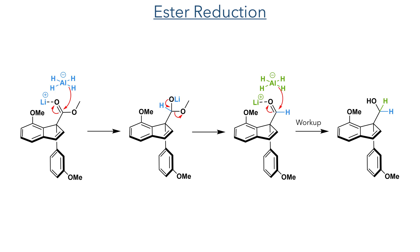The ester was then reduced using lithium aluminium hydride. Activation of the ester by coordination to the lithium cation increases the electrophilicity and allows the aluminium hydride to add in a nucleophilic fashion. This occurs twice to fully reduce the ester down to a primary alcohol.